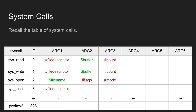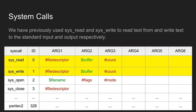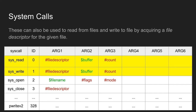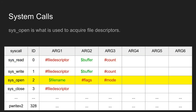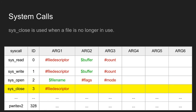Recall the table of system calls from the second tutorial. The top four system calls listed are some of the most important and basic ones we'll be using. Sysread and syswrite are what we use to display text on the screen and get user input — they can also be used to read from and write to files by acquiring the file descriptor from a given file. Sysopen is what we use to acquire file descriptors, and sysclose is what we use when a file is no longer in use.